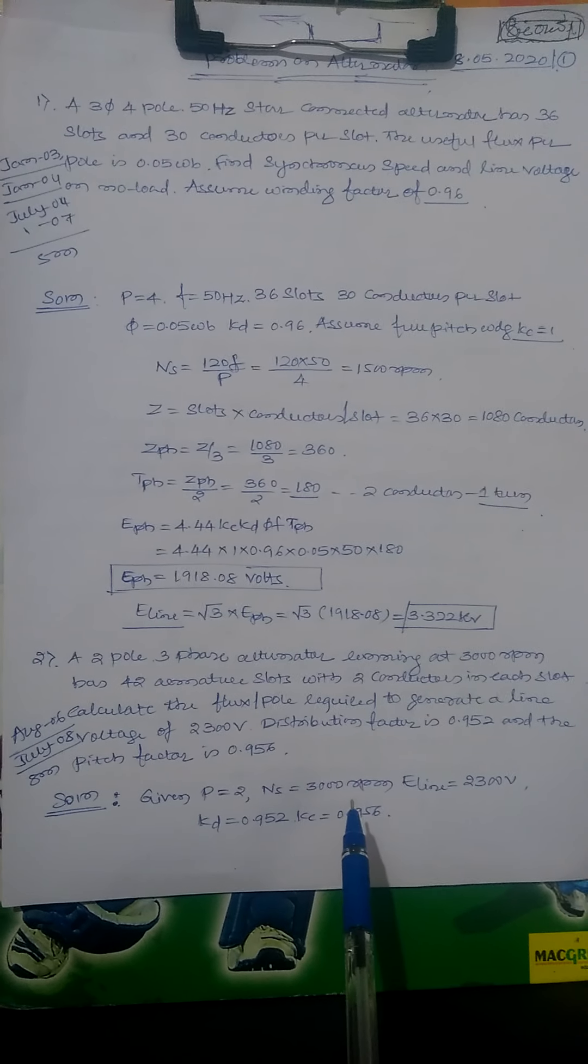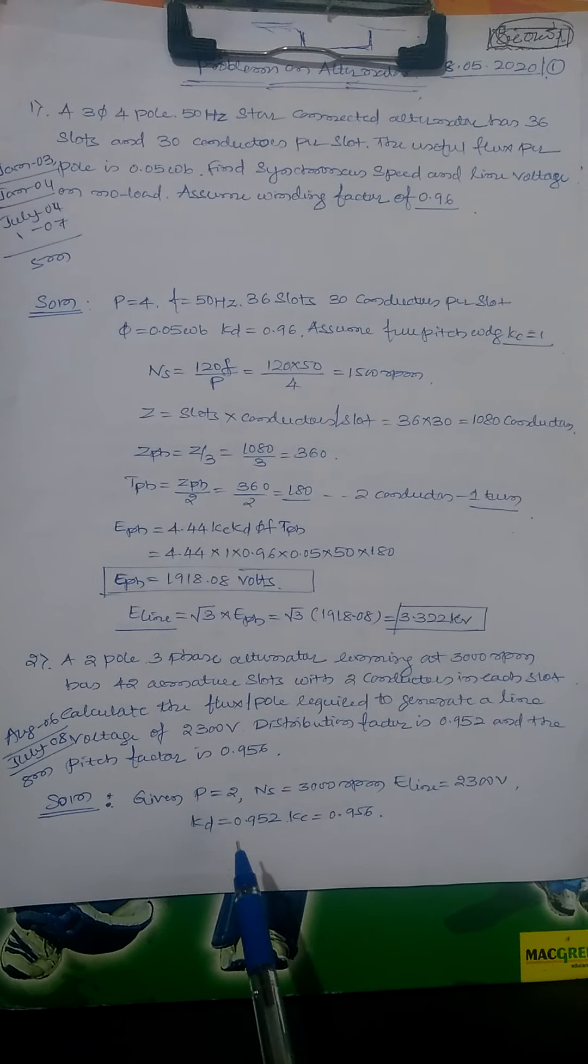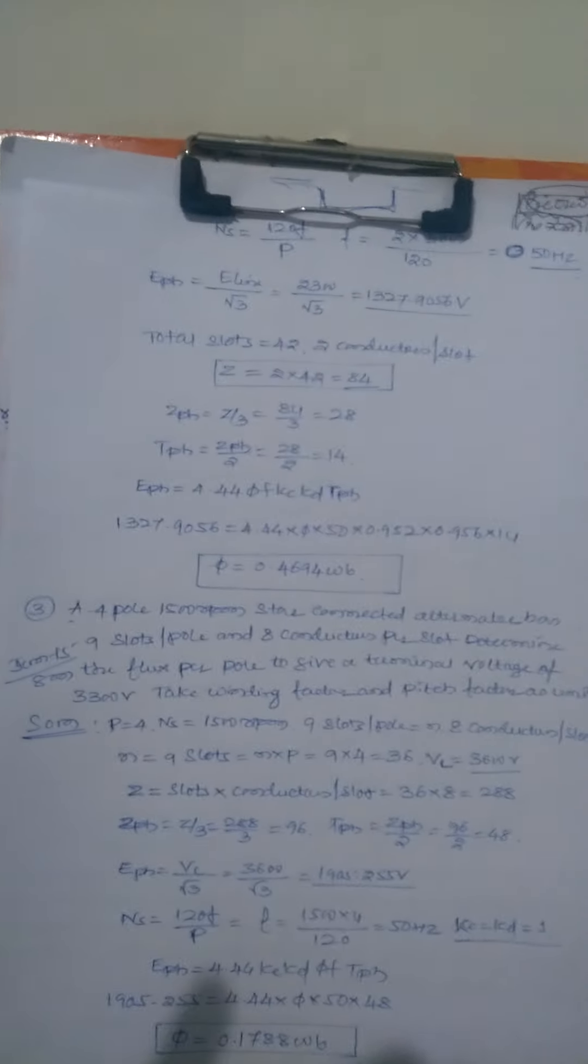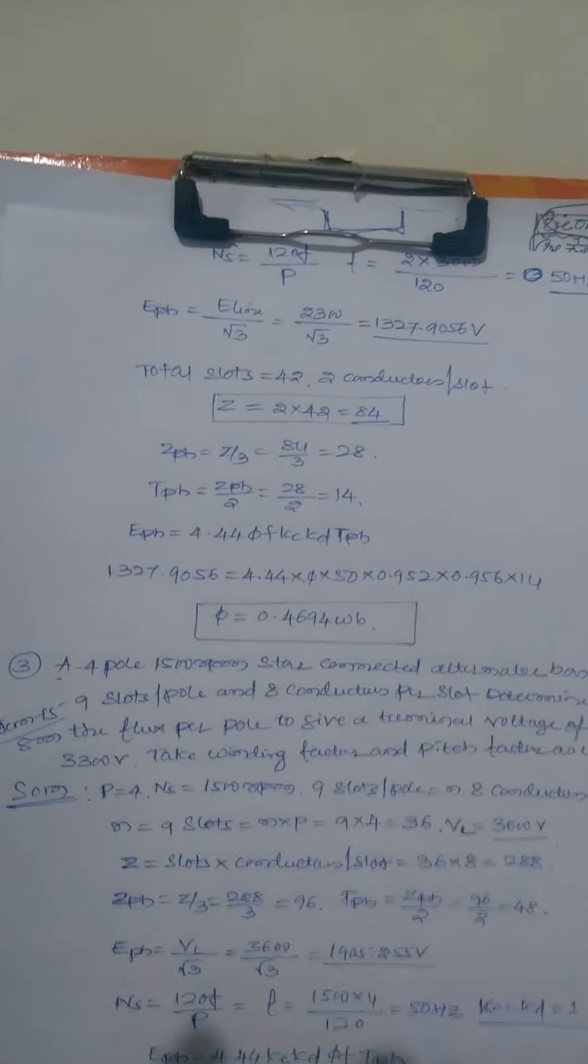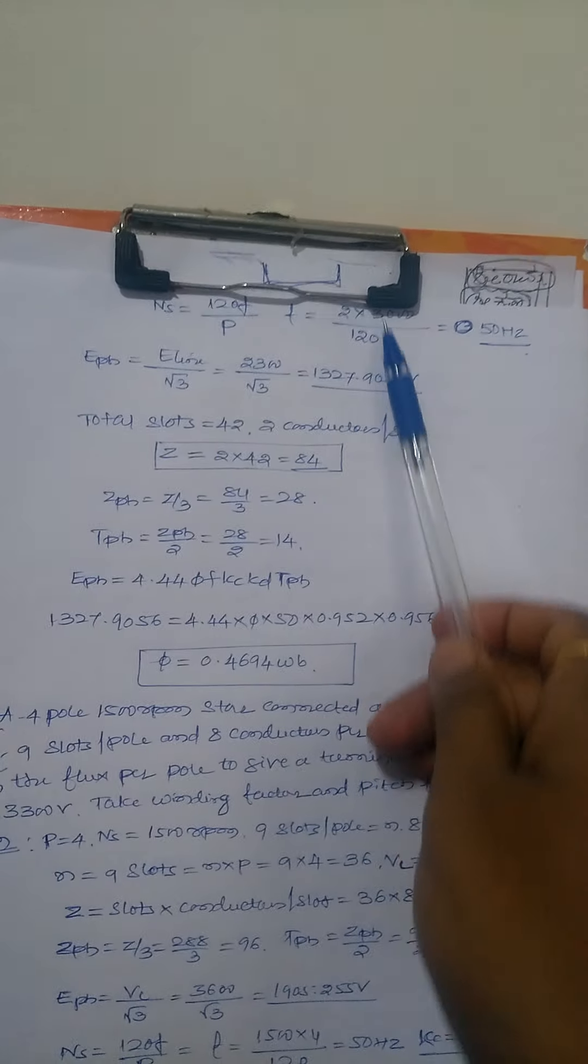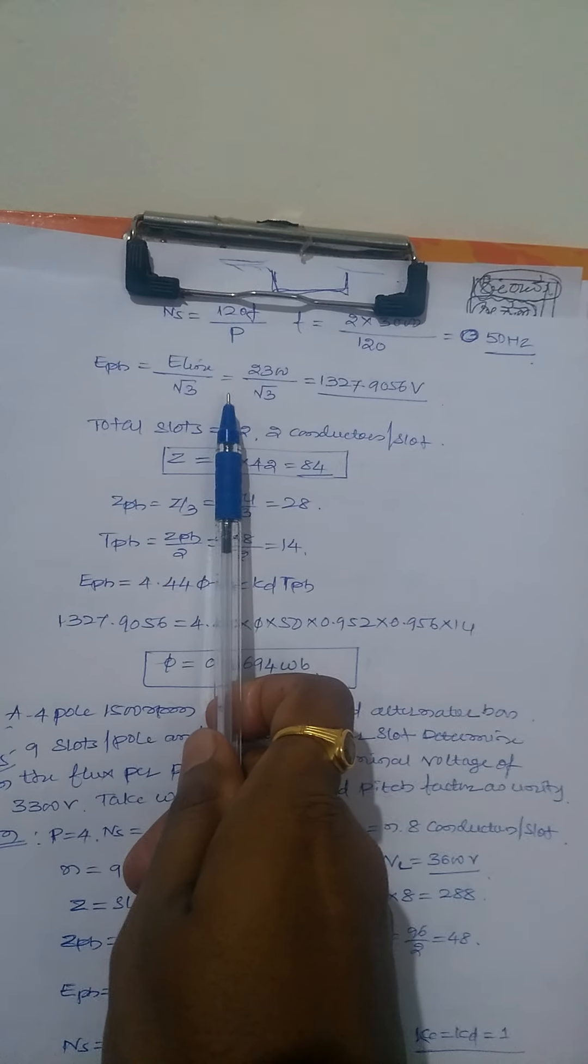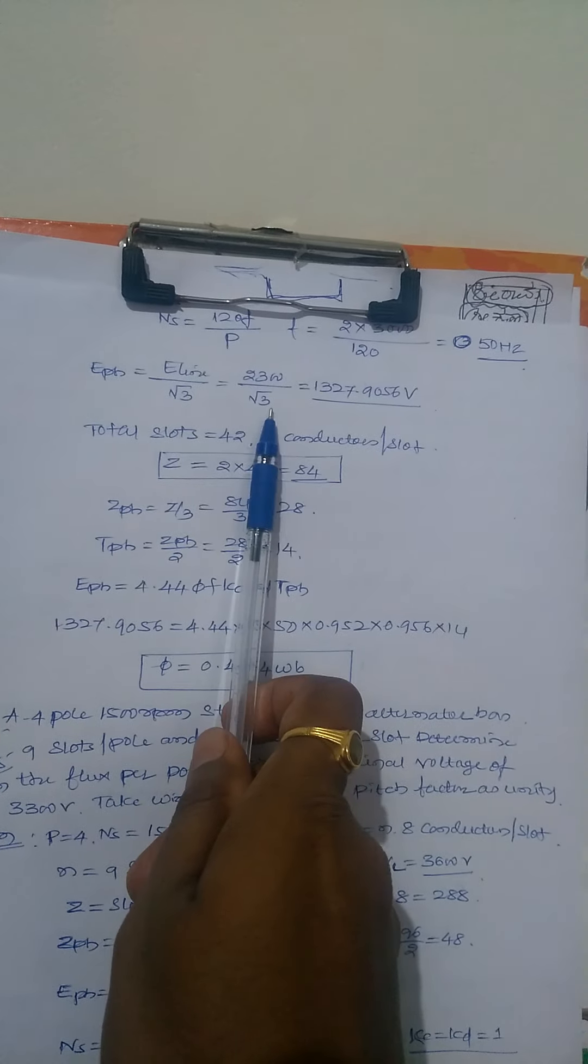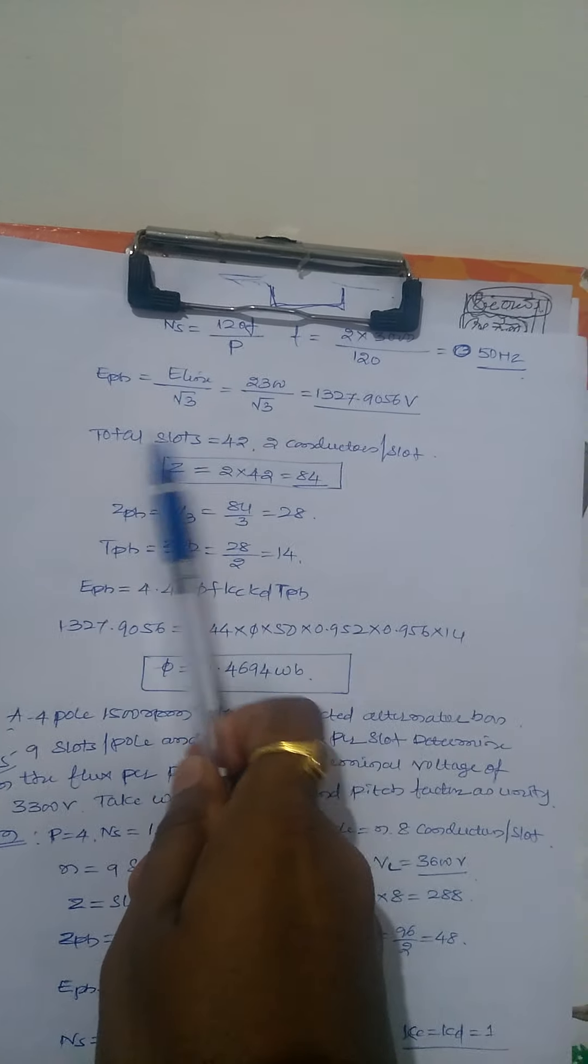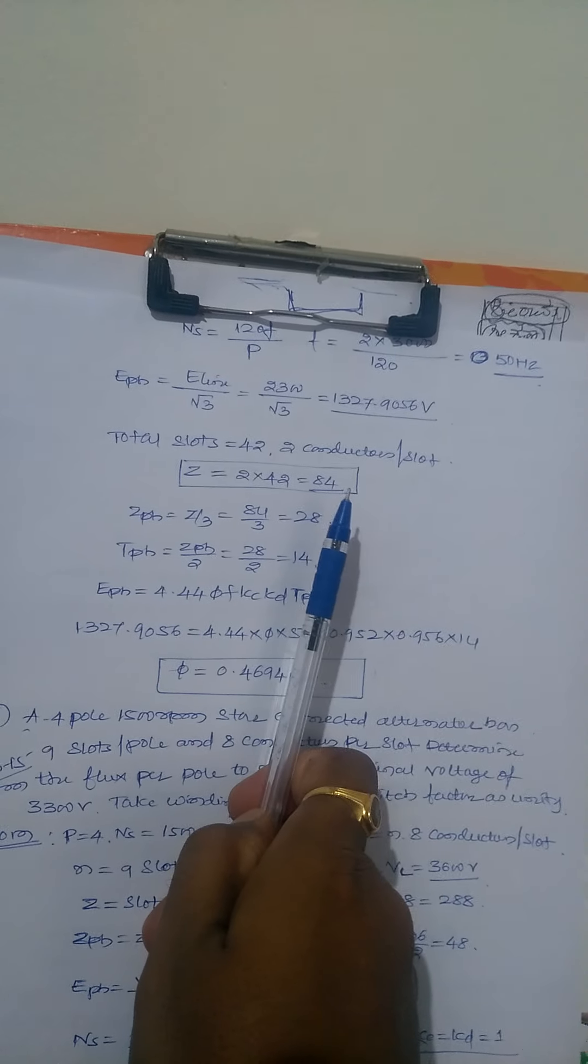Given: P equals 2, NS is 3000 rpm, line voltage is 2300, KD is 0.952, KC is 0.956. NS equals 120 F by P, so F equals 3000 times 2 divided by 120, that is 50 hertz. E phase equals line voltage by root 3: 2300 by root 3 is 1327.9056 volts.